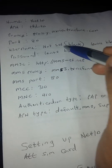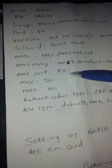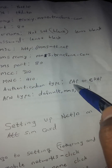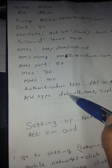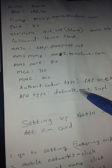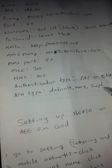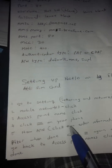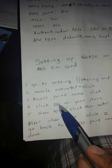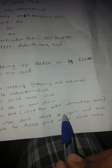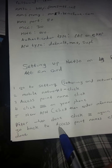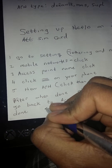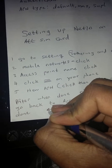Same here with the proxy — don't forget the dots. Then go to MMS Port: 80. MCC: 310. MNC: 410. Authentication type: PAP or CHAP. APN type: enter 'default/mms/supl' — make sure you enter that slash. When you're done, click the same three-line button again. It will give you an option to save — click Save. Then go back by pressing the arrow button.